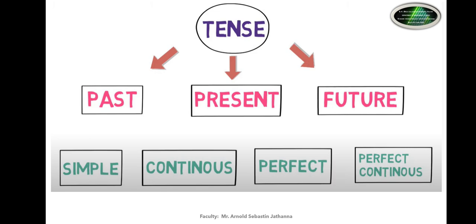Tenses are divided mainly into three types: past tense, present tense, and future tense. Each of these three types has four subtypes: simple, continuous, perfect, and perfect continuous. You can consider this as a family tree where the grandfather is 'tense,' who has three children - past, present, and future - and each parent has four sons with the same names: simple, continuous, perfect, and perfect continuous.